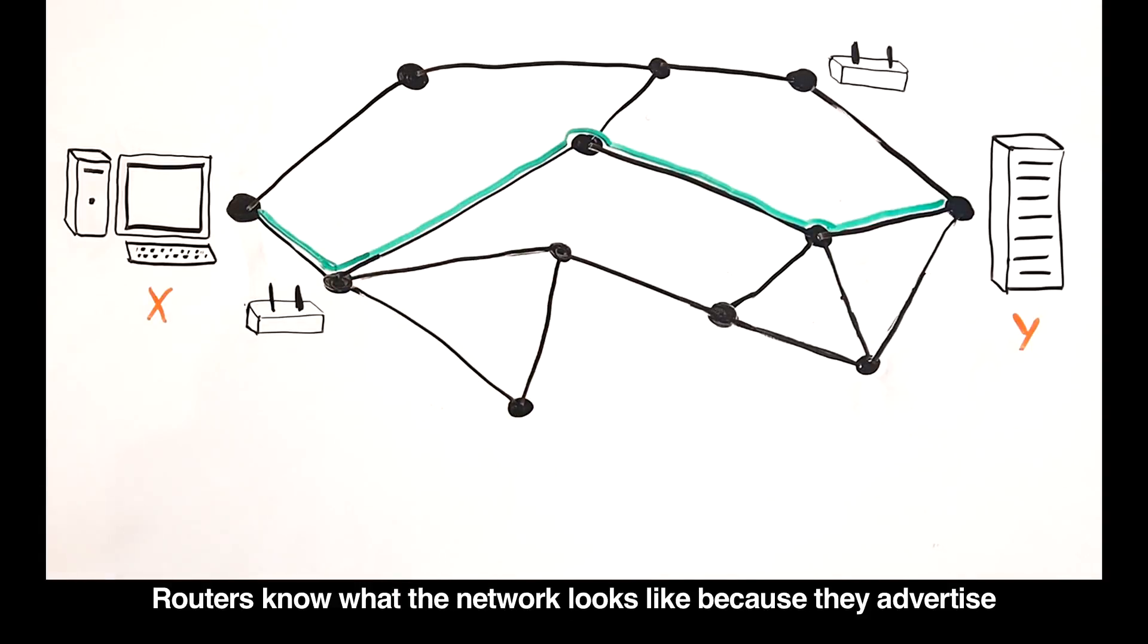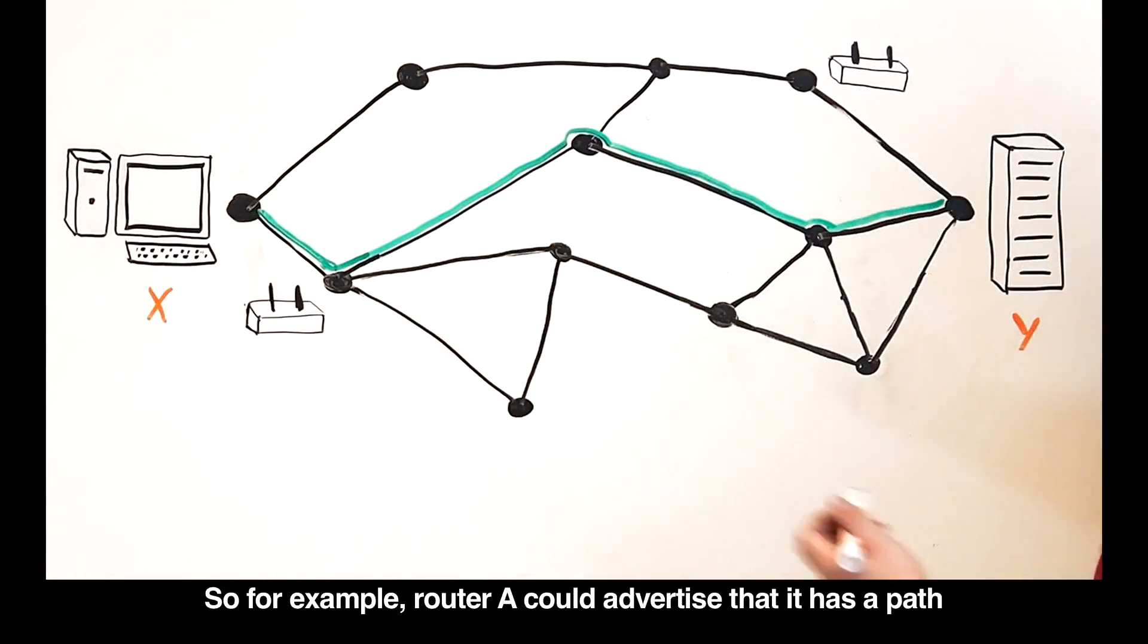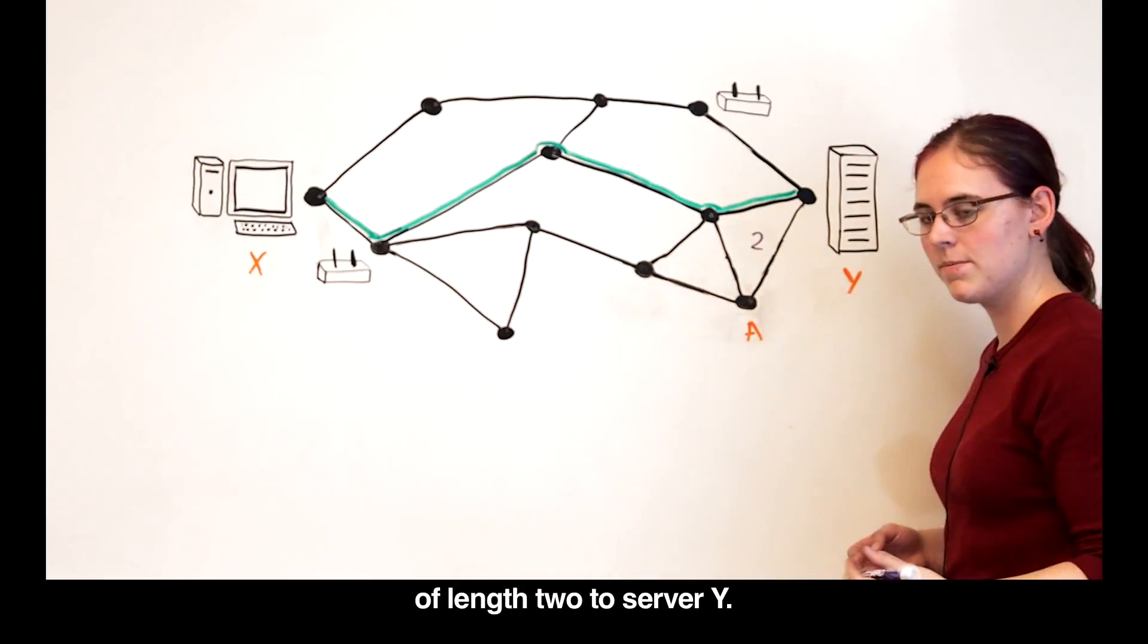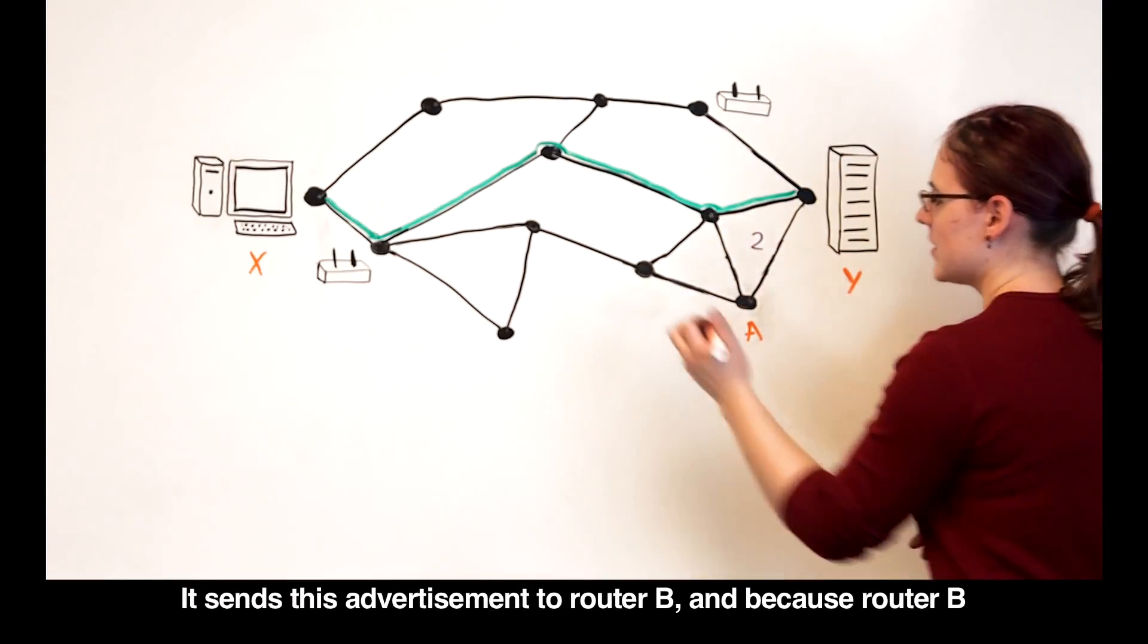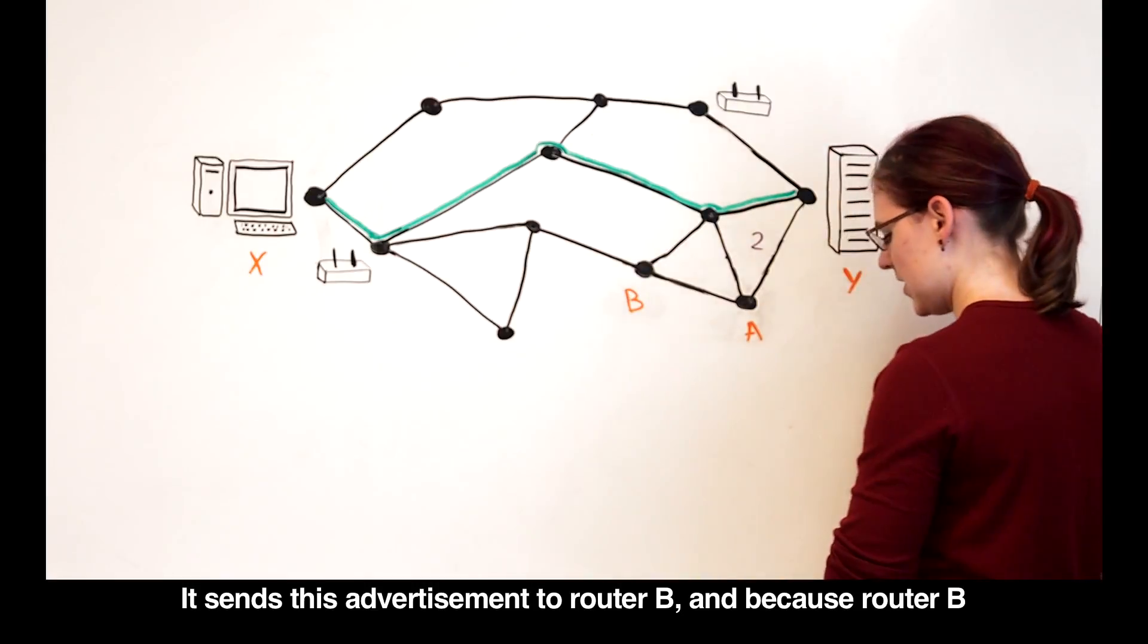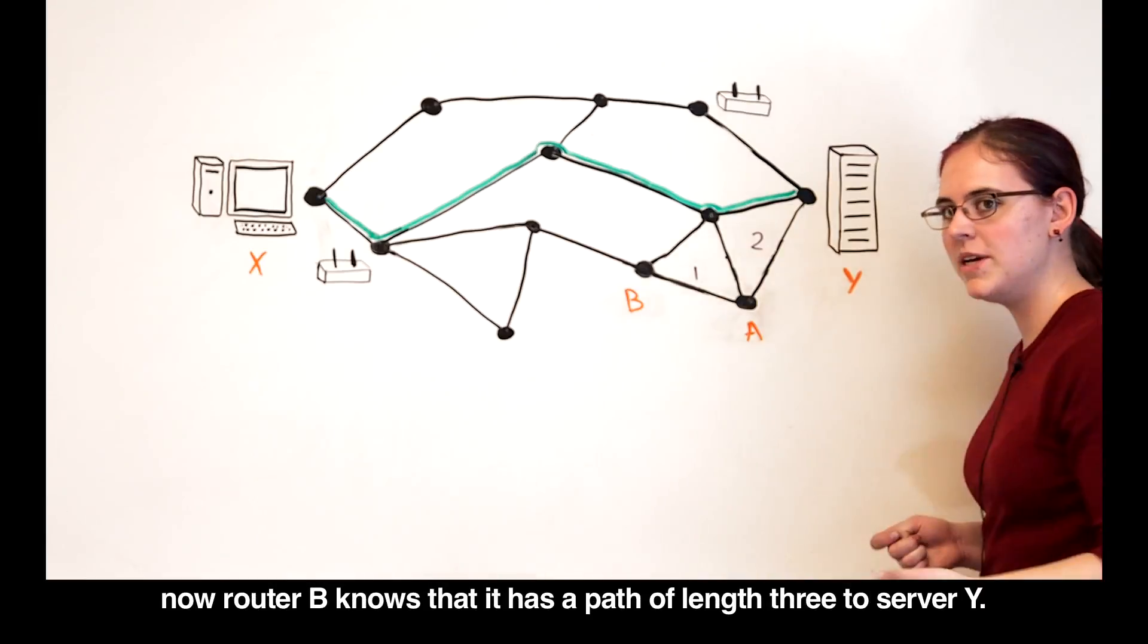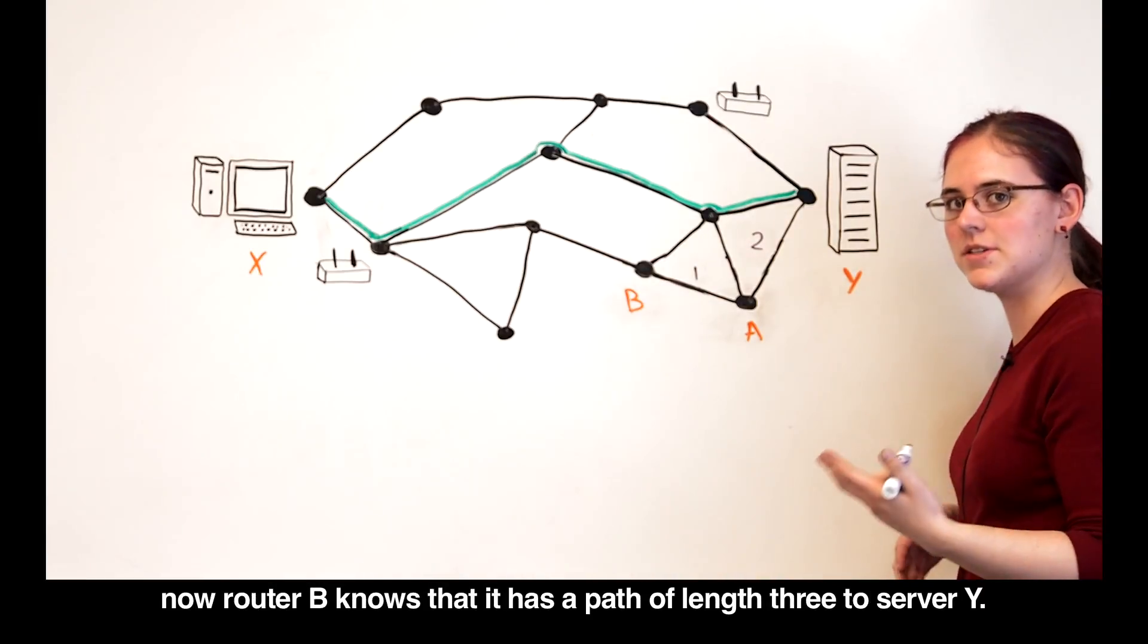Routers know what the network looks like because they advertise to each other about their connections. For example, router A could advertise that it has a path of length 2 to server Y. It sends this advertisement to router B, and because router B already knows that it has a path length of 1 to router A, now router B knows that it has a path length of 3 to server Y.